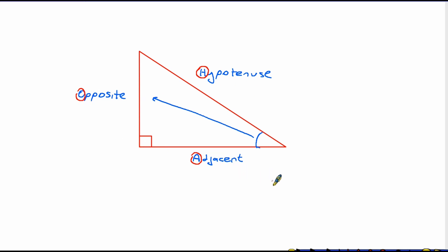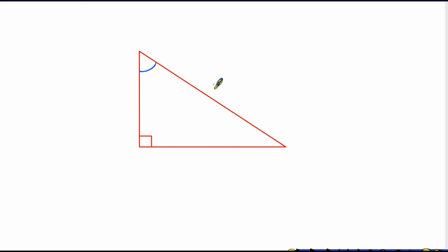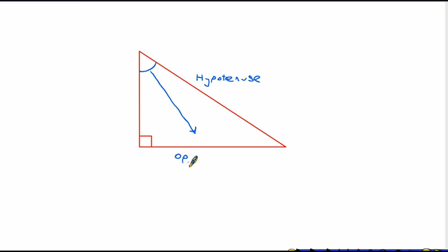Let's just clarify the naming of these by working with the other angle. Now we have a question where we are working with the top angle. As I said before, the longest side always has the same name, so hypotenuse stays where it is in all cases. But this time because the angle is up here, the opposite side is across the other side, therefore for a question like this, this becomes the opposite, and therefore the adjacent side is the remaining one. So you have to look at which angle you are using — that will tell you which side is opposite, and the adjacent is the third side.